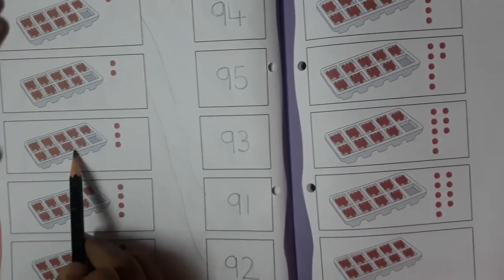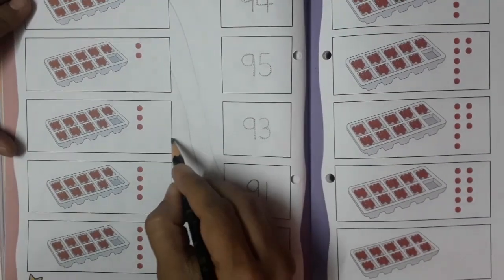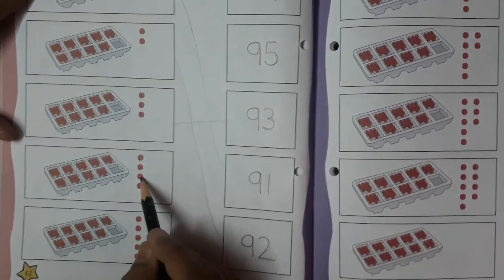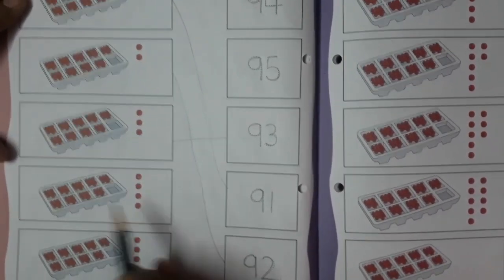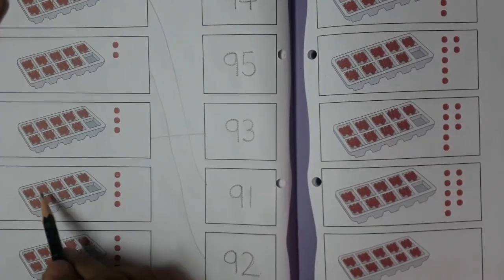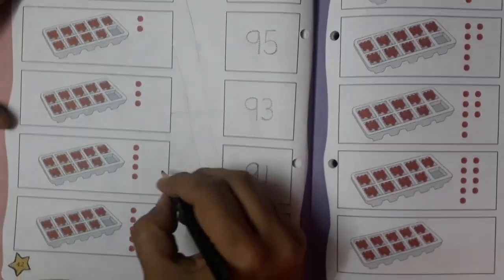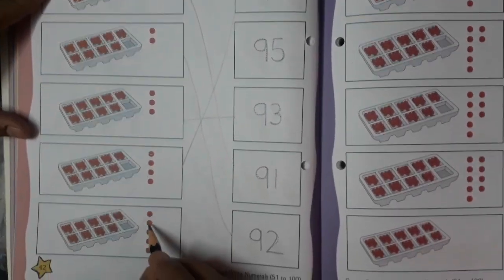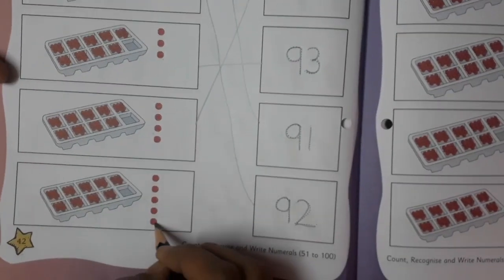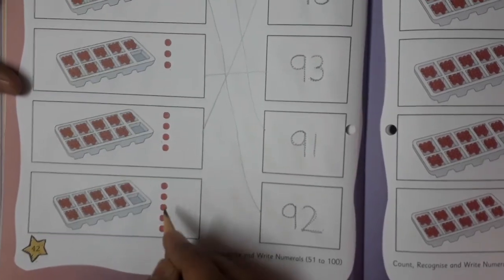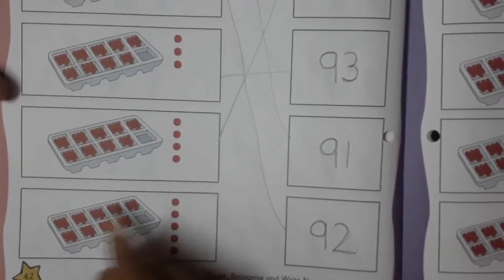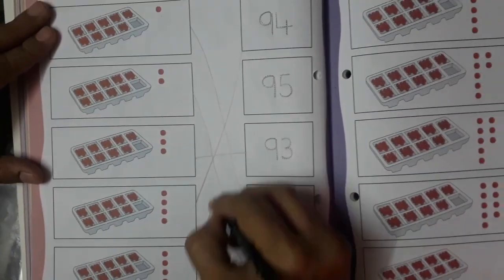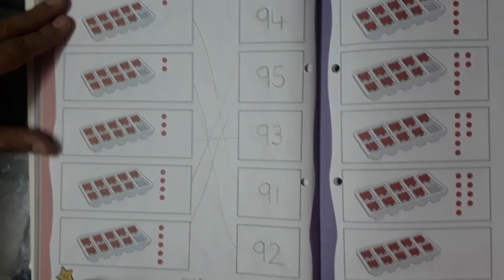And here 1, 2, and 4 cherries are there, so 90 and 4, 94. Now here 1, 2, 3, 4, and 5, so in this box we have 5 cherries out and 90 cherries are already in. Yes, so 90 and 5, 95. This way you have to finish, complete page number 42.